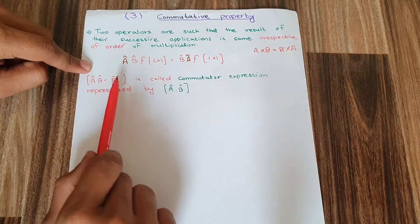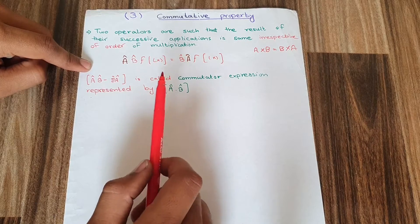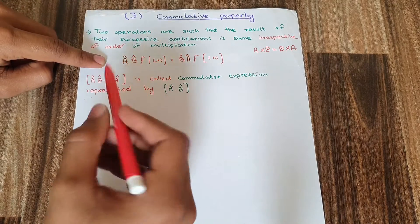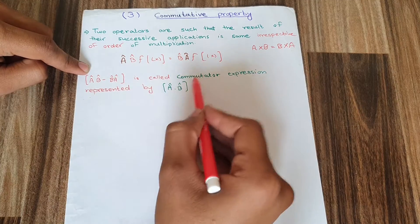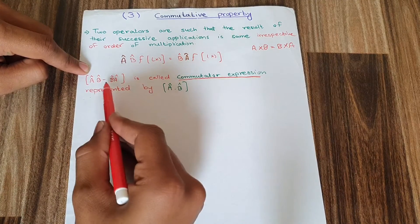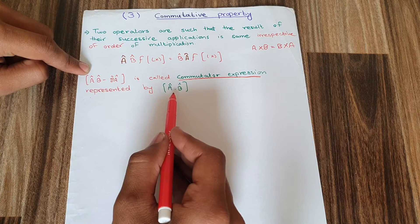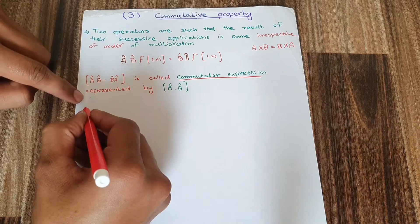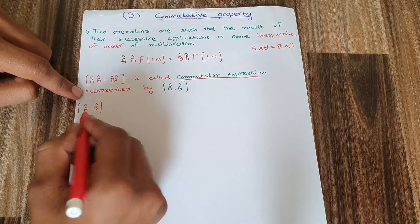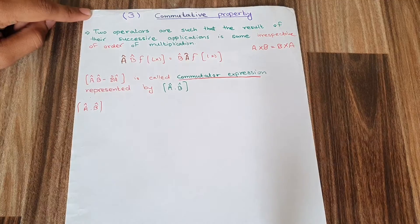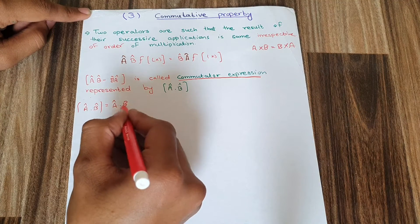If I subtract BA from AB, the answer should be equal to zero. This expression AB minus BA is called the commutator expression, represented as [A, B]. The commutator expression states that A and B are two operators that commute with each other.